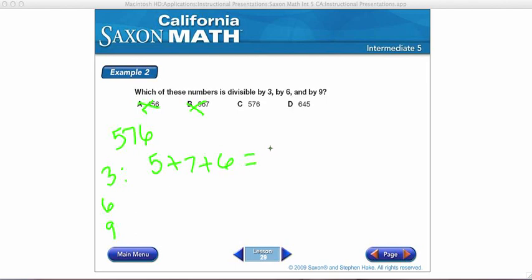5 plus 7 plus 6. 5 plus 7 is 12, plus 6 is 18. So it is divisible by 3. 18 is divisible by 9. Let's check for divisible by 6. This is even, so it is divisible by 2. And we already know it's divisible by 3.